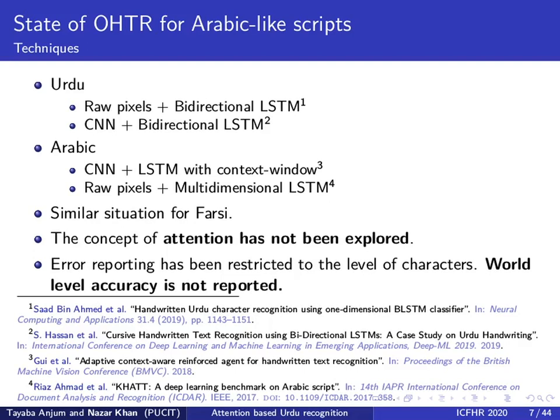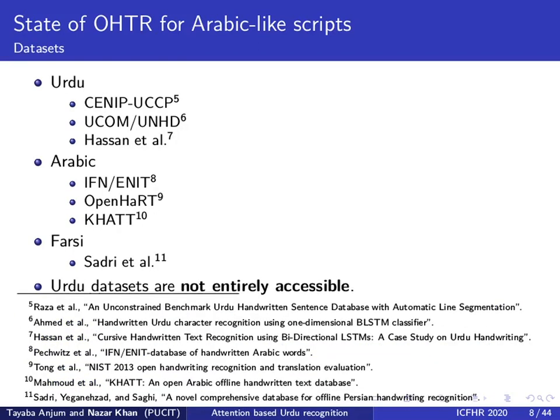Let us also take a look at some offline handwritten text datasets for Arabic-like scripts. Since recognition of handwritten Urdu text is not a very old problem, there are only three significant datasets dating from 2012 to 2019. However, these datasets are not entirely accessible. Datasets for handwritten Arabic are more accessible but cannot be used to train a complete Urdu recognizer.